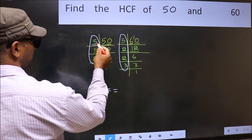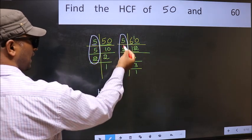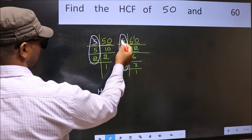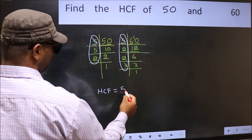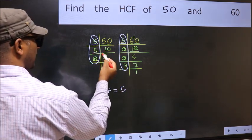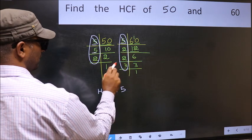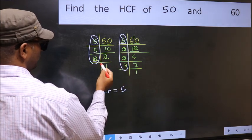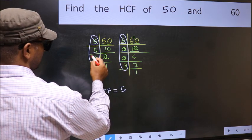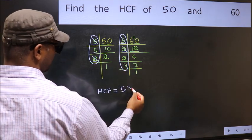Starting with the number 5. Do we have 5 here? Yes. So cut 5 right here. Next number 5. Do we have 5 here? No. Next number 2. Do we have 2 here? Yes. So cut 2 right here.